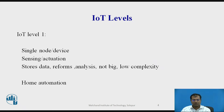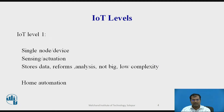In home automation, a single node controls the lights and appliances based on electrical relay switches. There will be a local database and a local controller which operates based on triggers, and the devices are connected to the internet.